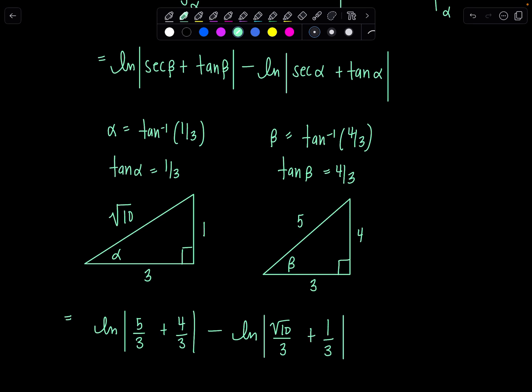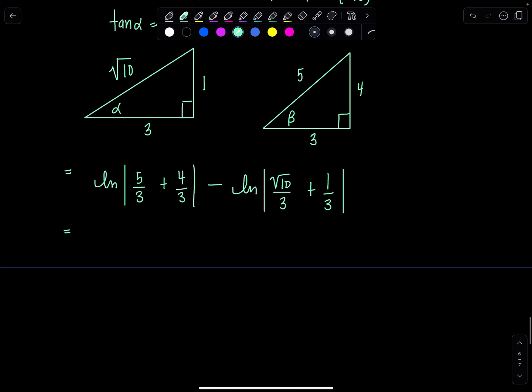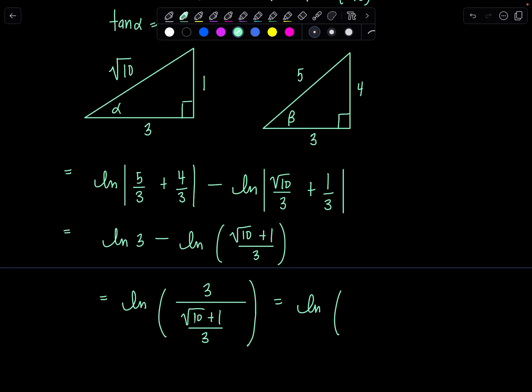Now we just have to clean up our answer and use our log properties. This is natural log, five thirds plus four thirds is nine thirds, that's just three, which is already positive, I don't have to write absolute value anymore, minus natural log, this is rad 10 plus one over three. And we can simplify further. We can use our properties of logarithms. This is natural log of three divided by rad 10 plus one over three. And then if I divide by the denominator, then I'll have natural log of nine over rad 10 plus one.